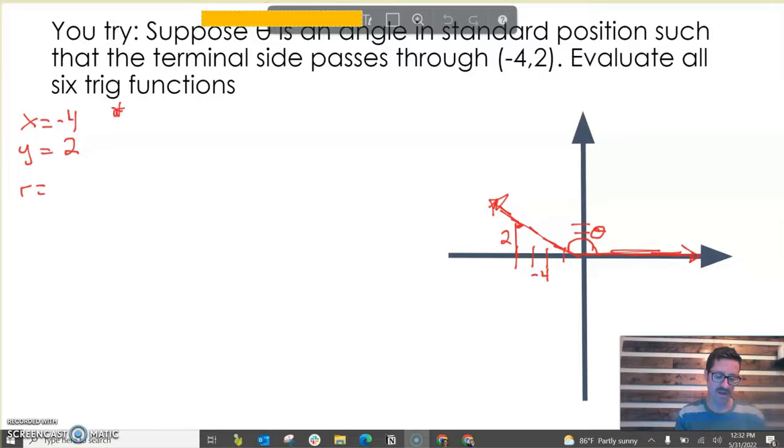x is -4, y is 2. For our r, we have to use Pythagorean theorem. I'm not going to skip this because it doesn't give us nice values. Four squared is 16, two squared is 4, so 16 plus 4 is 20. So our radius is the square root of 20. If we simplify that radical, 20 is 4 times 5, and the square root of 4 is 2. So our r value is 2√5, and we always consider that radius as a positive value.